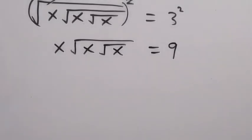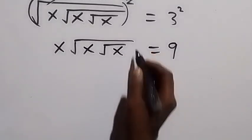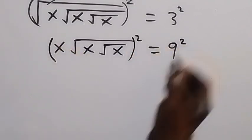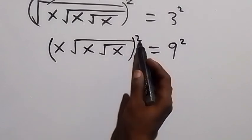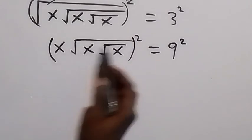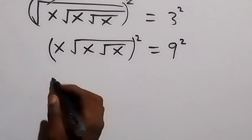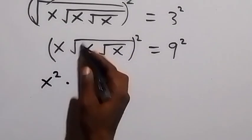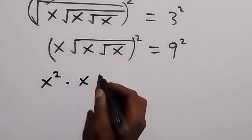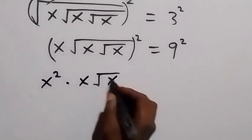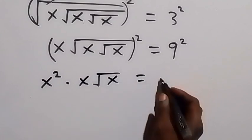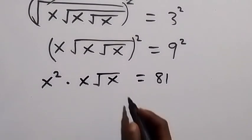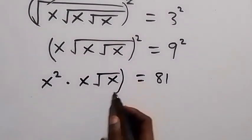In the next step, let's square both sides again. This square will affect x and also affect this root, so this will be x squared, then multiplied — the square cancels the square root — and that will be x root x, which equals 9 squared, giving us 81.